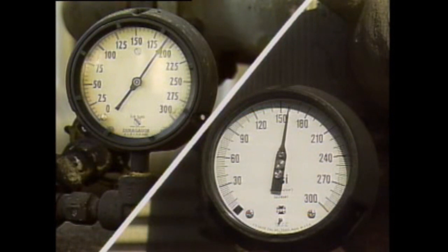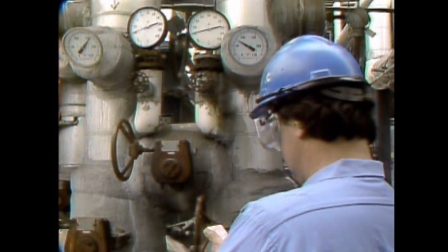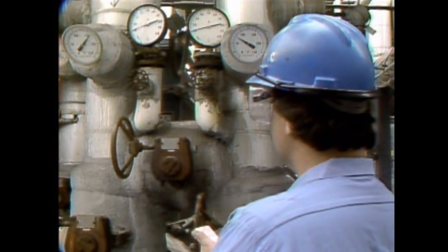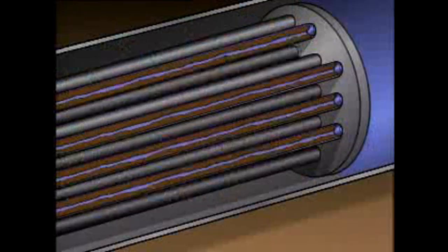In some situations, fouling can become bad enough to restrict the fluid flow. This problem may show up on the heat exchanger's instruments as an increase in the pressure drop or as a gradual decrease in the flow through the affected side of the unit. Fouling may also affect the temperature of both fluids passing through the heat exchanger. When fluid flow is restricted, the heat exchanger must be cleaned.